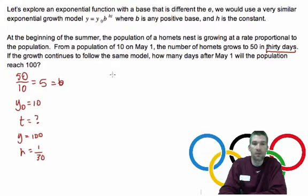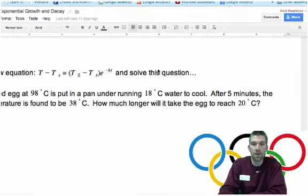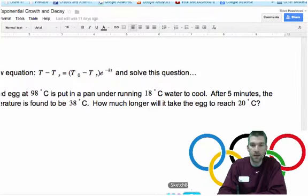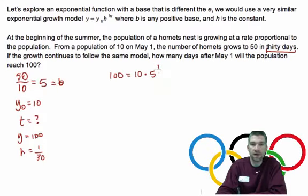All right. So, here's what my problem is going to look like. 100 equals 10 times 5 to the 1... What the heck? 10 times 5 to the 1 30th times T.